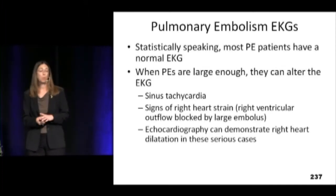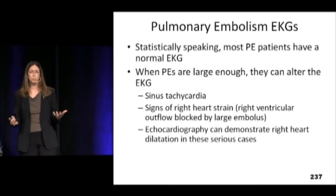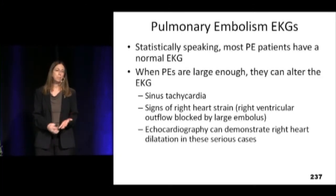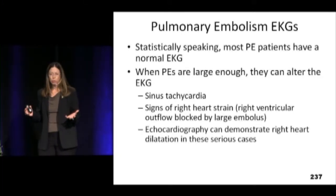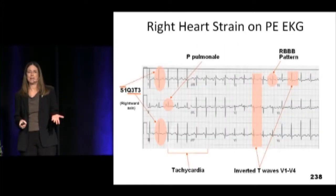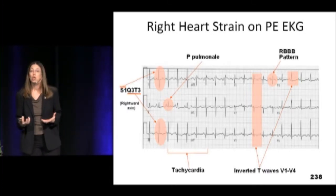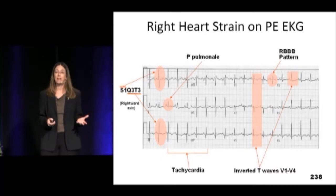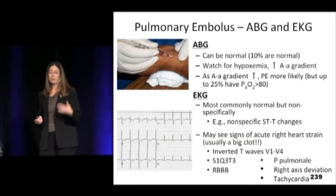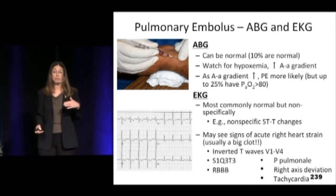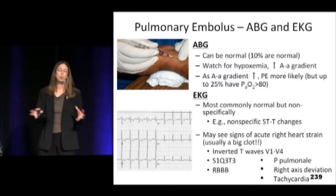The ECG is something we order a lot when people might have a PE. If you see right-sided strain, P pulmonale, the S1Q3T3 — basically those kinds of findings — that's a big PE. That's somebody who has enough clot burden that they're straining the right side of their heart. More often what you see is either nothing or just sinus tachycardia. The S1Q3T3 happens about 2% of the time with pulmonary embolism and it's not specific to PE. It's cool if it's there, but don't hang your hat on it.